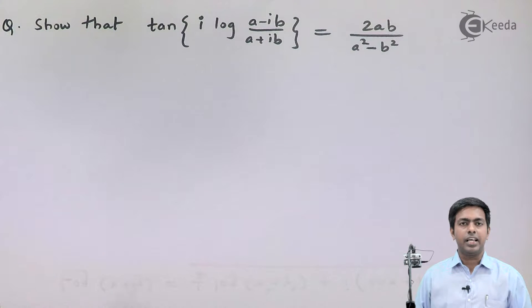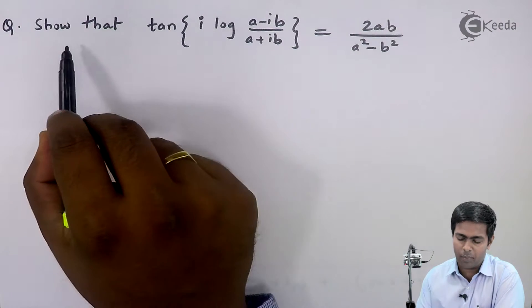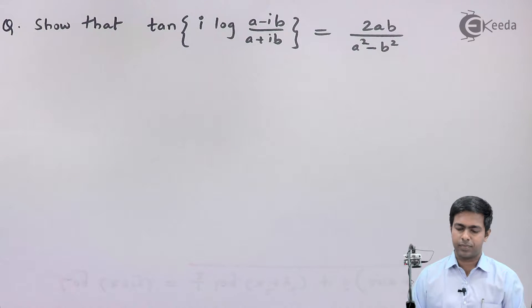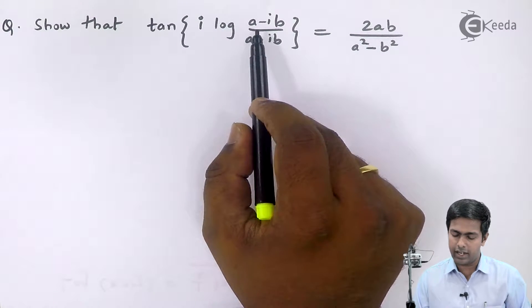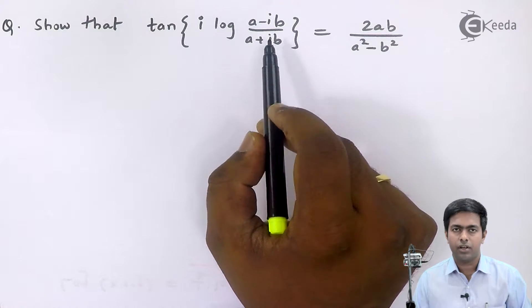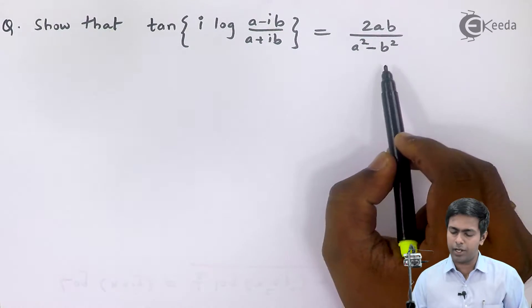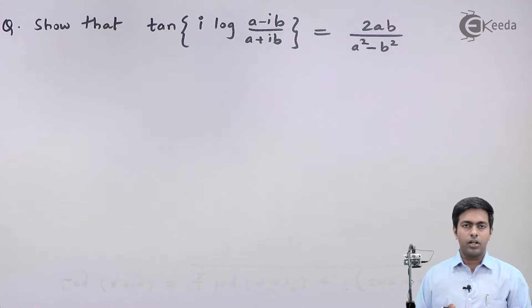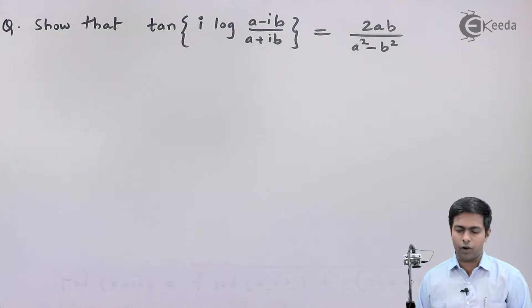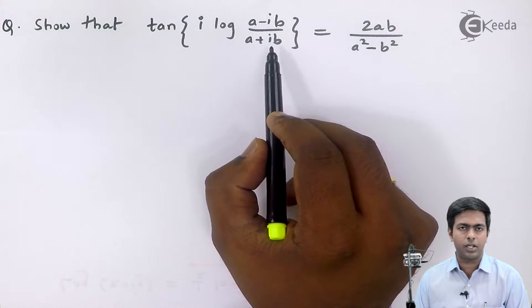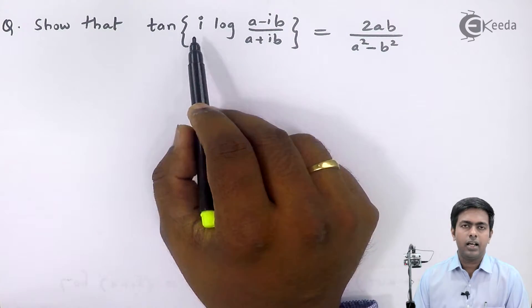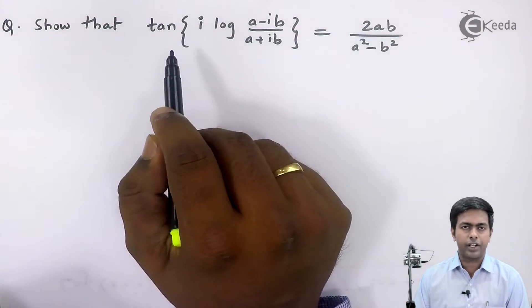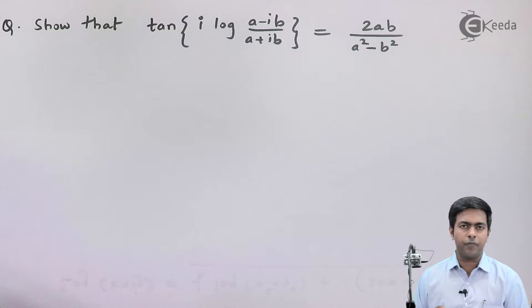Here in this video we are going to see a problem based on logarithm of complex numbers. The question is to show that tan of i·log((a - ib)/(a + ib)) is equal to 2ab/(a² - b²). To start with the solution, I'll first find the log of this complex number using the formula of logarithm of a complex number, then multiply by i, and then find the trigonometric ratio tan of that value.